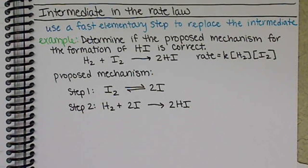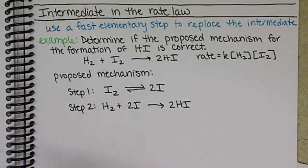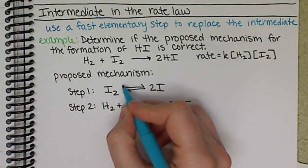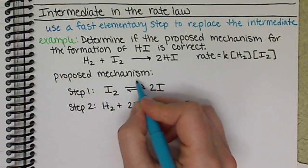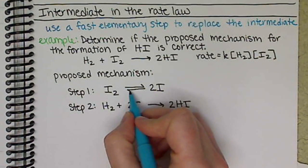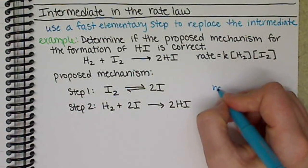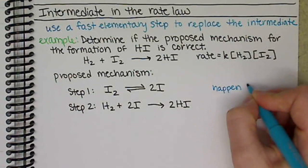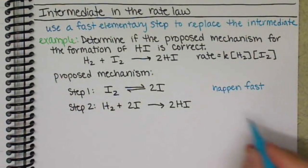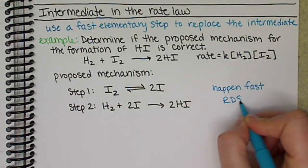Typically in a proposed mechanism you would be told which reaction is fast or slow by the words fast or slow being added. In this case, the double reaction arrows tell us that step one is going to happen very fast. Any time we see the double reaction arrows — the forward and the reverse — that means this is going to happen fast, which makes step two our rate-determining step.